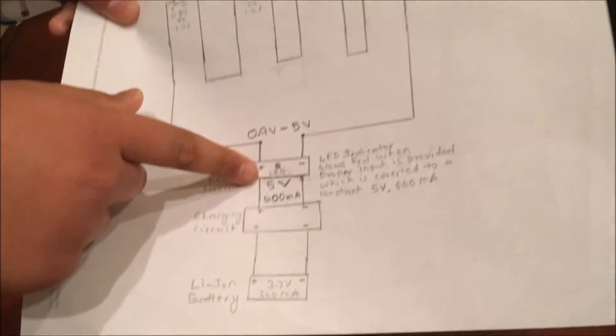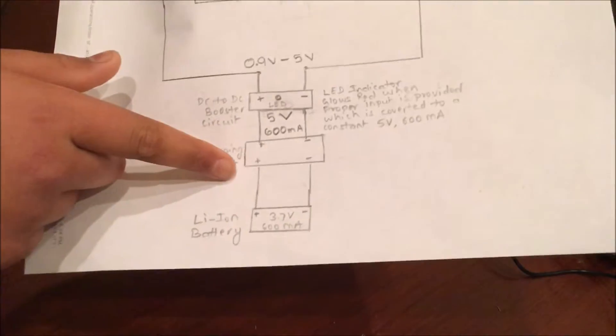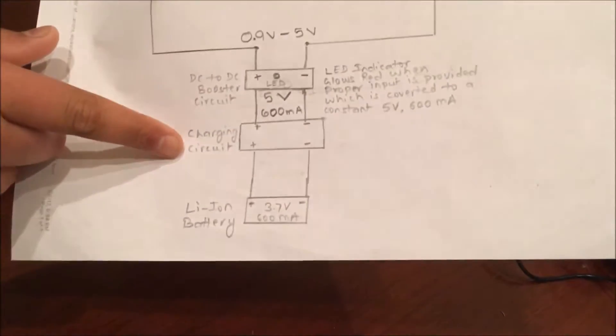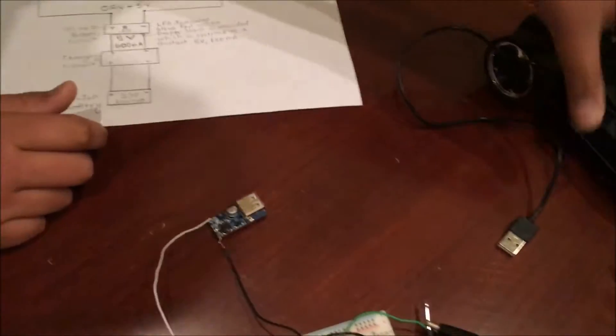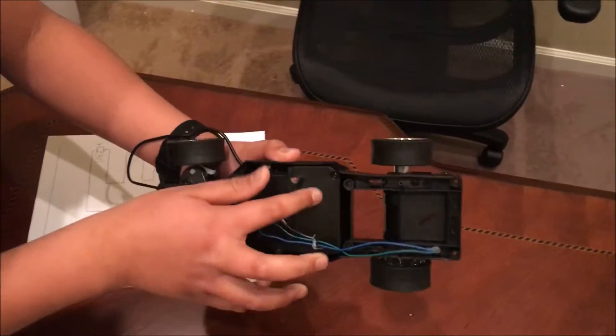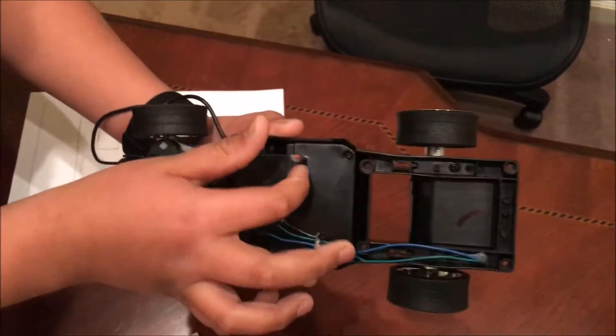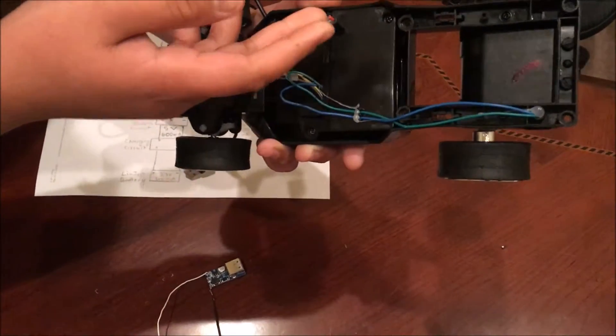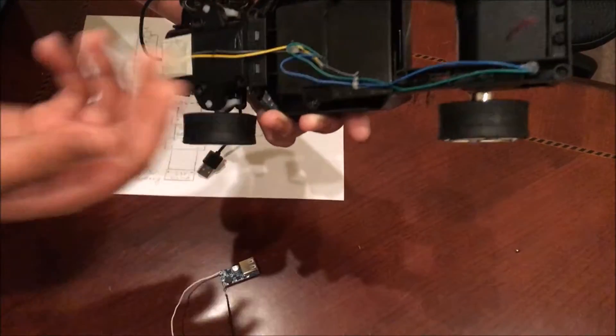As you can see in the circuit diagram, from the boost converter, the current goes to the charging circuit. The charging circuit is in this RC car. Right now, it's protected under this plastic lid. And this plastic lid protects the charging circuit and the lithium-ion battery.